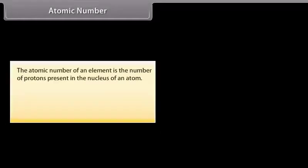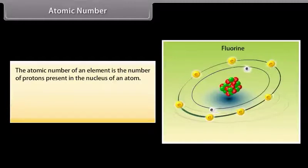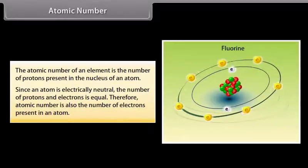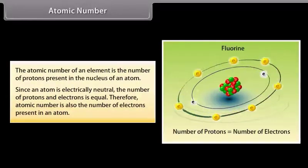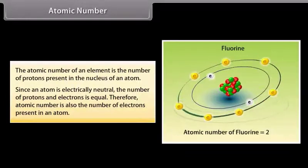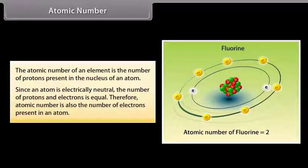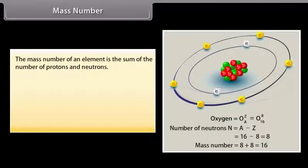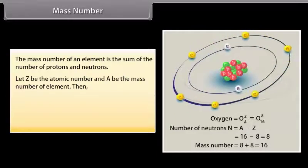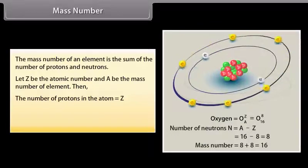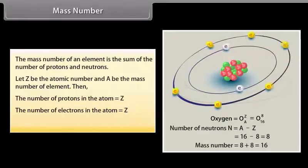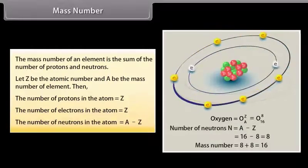The atomic number of an element is the number of protons present in the nucleus of an atom. Since an atom is electrically neutral, the number of protons and electrons is equal; therefore, atomic number is also the number of electrons present in an atom. The mass number of an element is the sum of the number of protons and neutrons. If Z is the atomic number and A is the mass number, then: number of protons = Z, number of electrons = Z, and number of neutrons = A − Z.